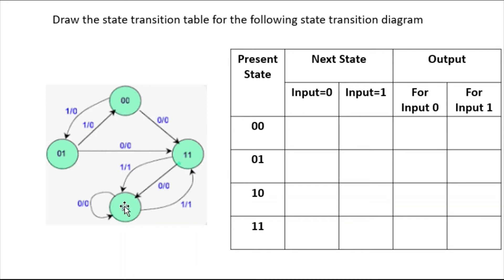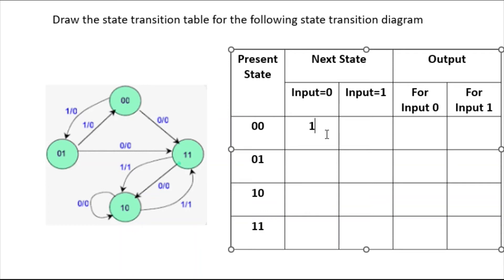Again present states are zero-zero, zero-one, one-zero, one-one. In the figure the states may be given in anti-clockwise order but no problem — the values written inside the circle are the present states. Let's start with zero-zero. Zero-zero is going to one-one state when input is zero and output is zero. This zero-zero arrow is going to zero-one when input is one, and output is zero.